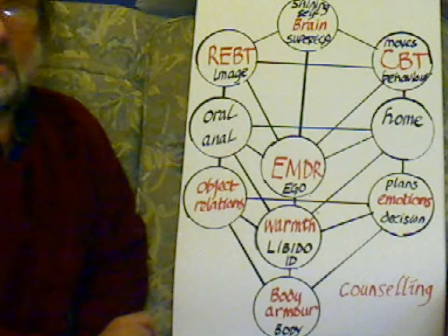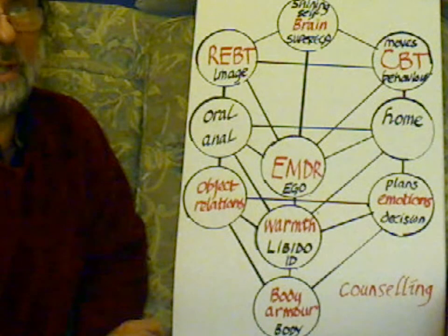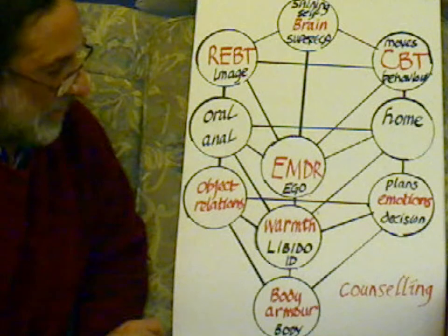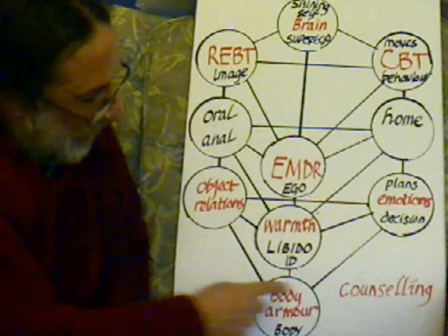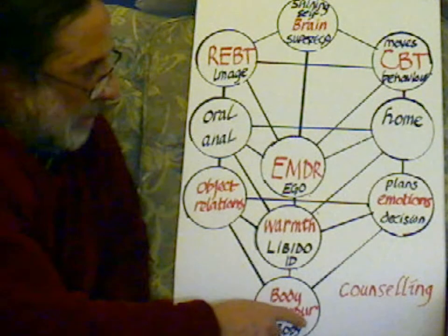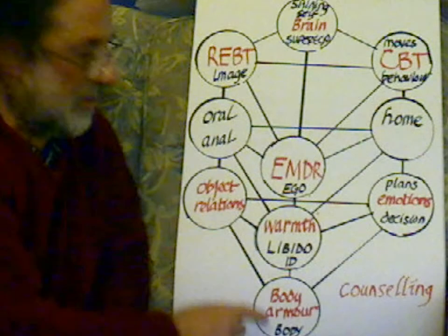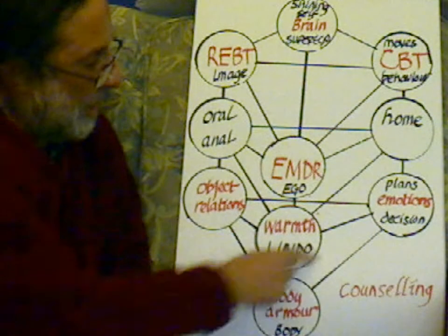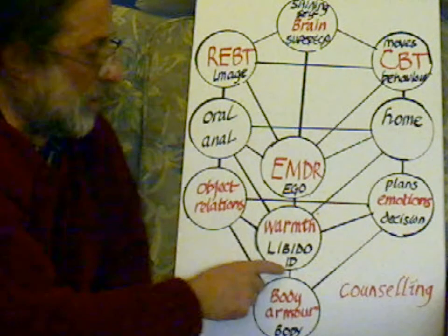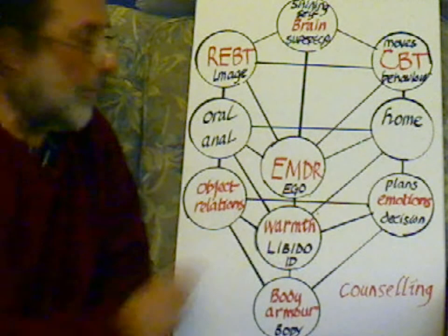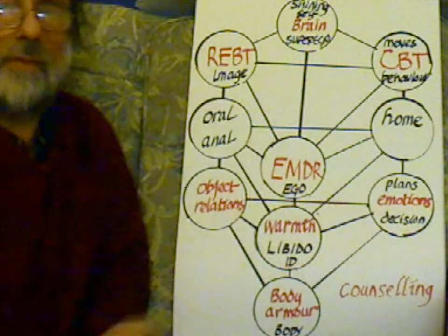The first thing to say for counsellors or counselling students is about Maslow's hierarchy of need. At the bottom we have the needs of the body — food, obtaining objects, the flow of things. Next we have the social needs, which are clearly seen as the same as the sexual needs, or the need for human warmth. And then we have the need for self-actualisation.